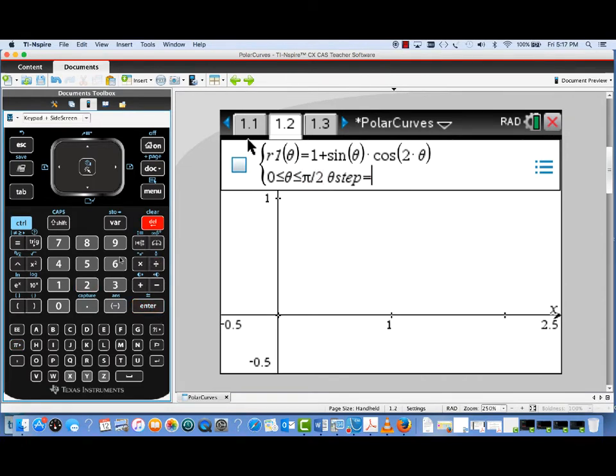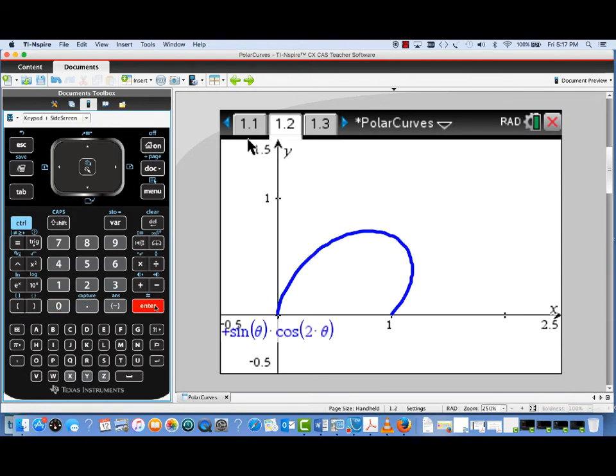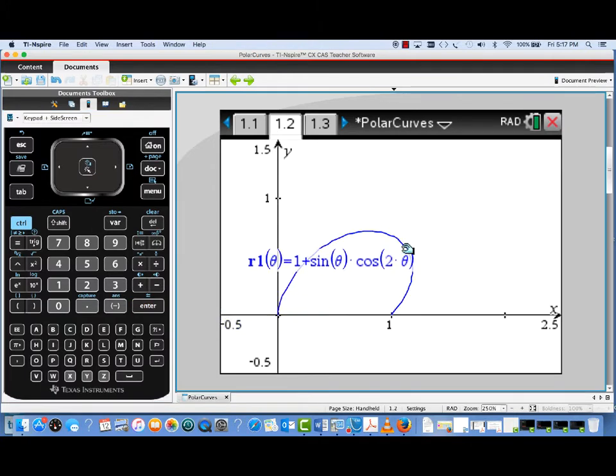And the Theta step is the increment that will be used for plotting. We're going to change that to Pi over 60. It's convenient to use a denominator for Pi that's a multiple of both 4 and 6. We've entered that and graphed it. And there we've got the nice polar curve. I'm going to move the label up here where we can see it, but it's out of the way of the curve.